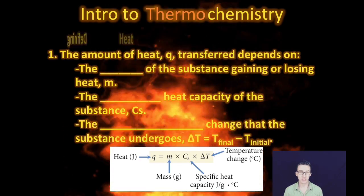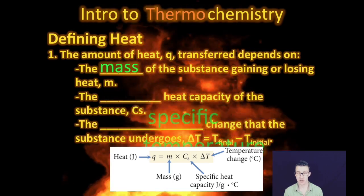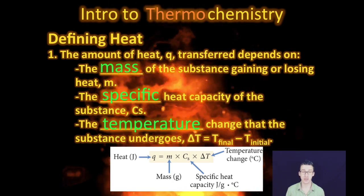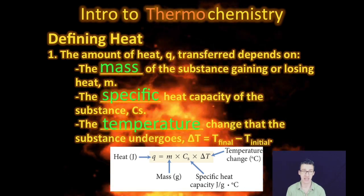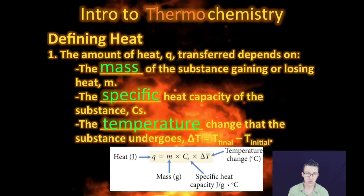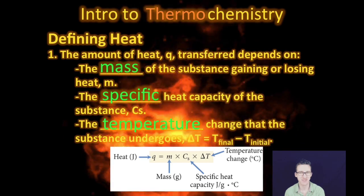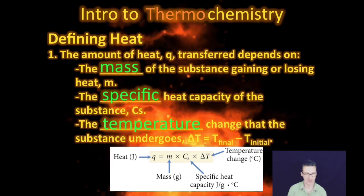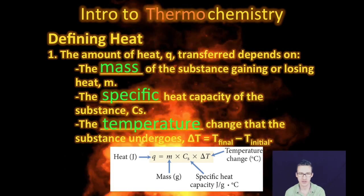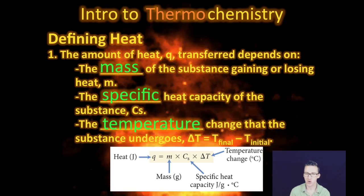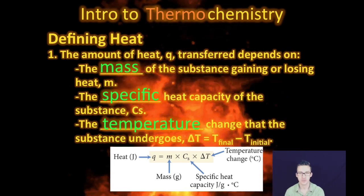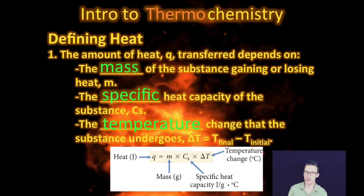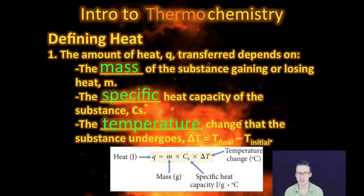In order to determine the amount of heat that is transferred, it really depends on three things. One, you need to know the mass of the substance that's gaining or losing heat. Two, you need to know the specific heat capacity of that substance, which we'll talk about in a minute. And three, you need to know the temperature change that the substance undergoes. If you can determine those three things, you can determine the amount of heat that has been transferred.